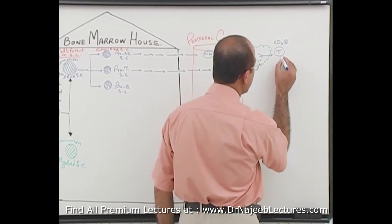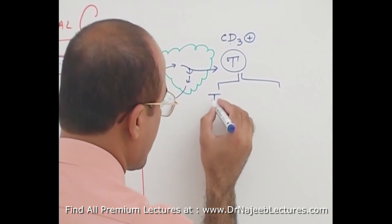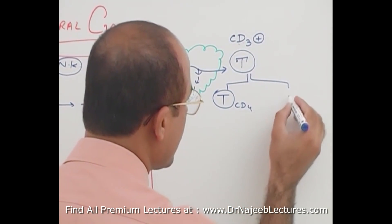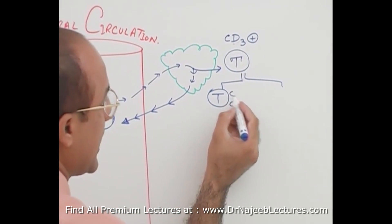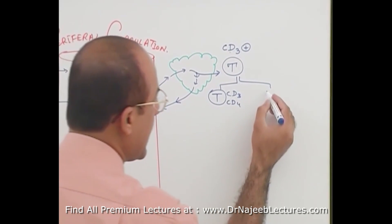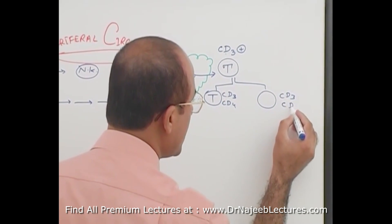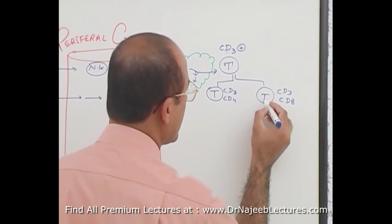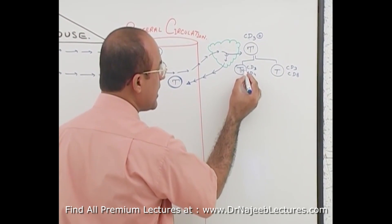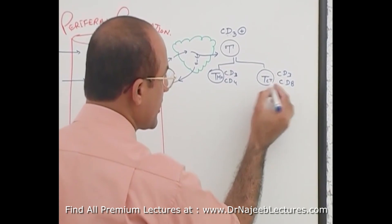These T cells are divided into two types: some T cells are CD3 and CD4 positive, while other T cells are CD3 and CD8 positive. Those that are CD4 positive are called T helper cells, and those that are CD8 positive are called T cytotoxic cells.